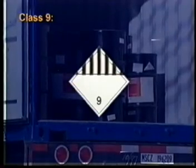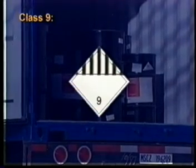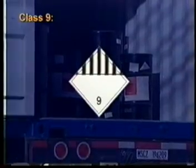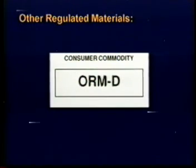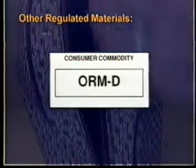Class 9: miscellaneous hazardous materials. These are any materials that may pose a risk to health, safety, and property which are not covered in other hazard classes. Class 9 includes environmentally hazardous substances, hazardous wastes, and marine pollutants. Familiar examples of Class 9 materials are dry ice and asbestos. In addition to these nine hazard classes, DOT defines other regulated materials, or ORMs. ORM-D materials present a limited hazard during transportation due to their form, quantity, and packaging. Consumer commodities fall into this category.